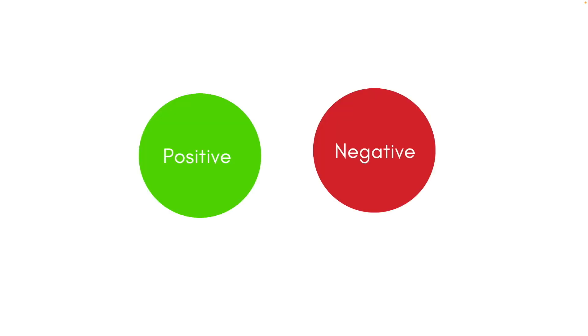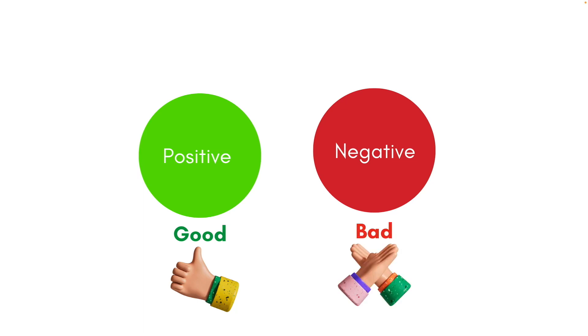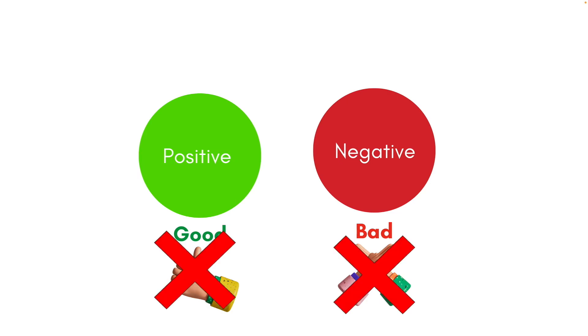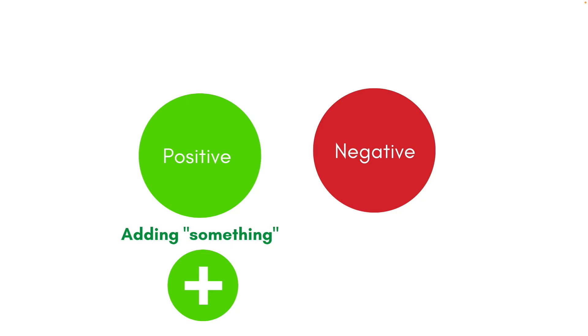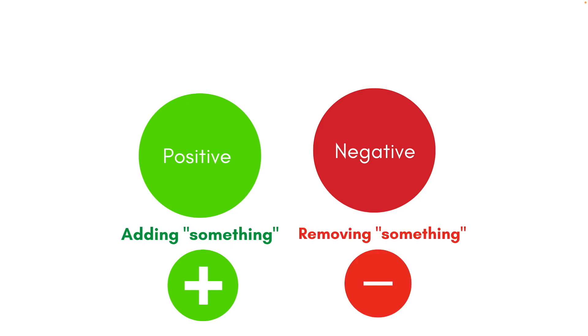Before moving further, let's clarify a few terminologies that will help us understand the concepts of reinforcement and punishment better. In the context of operant conditioning theory, we use everyday words such as positive and negative. In everyday context, positive could mean something good and negative something bad. However, in operant conditioning, positive stands for adding something and negative stands for removing something. Keep this in mind as it will help you understand reinforcement and punishment.